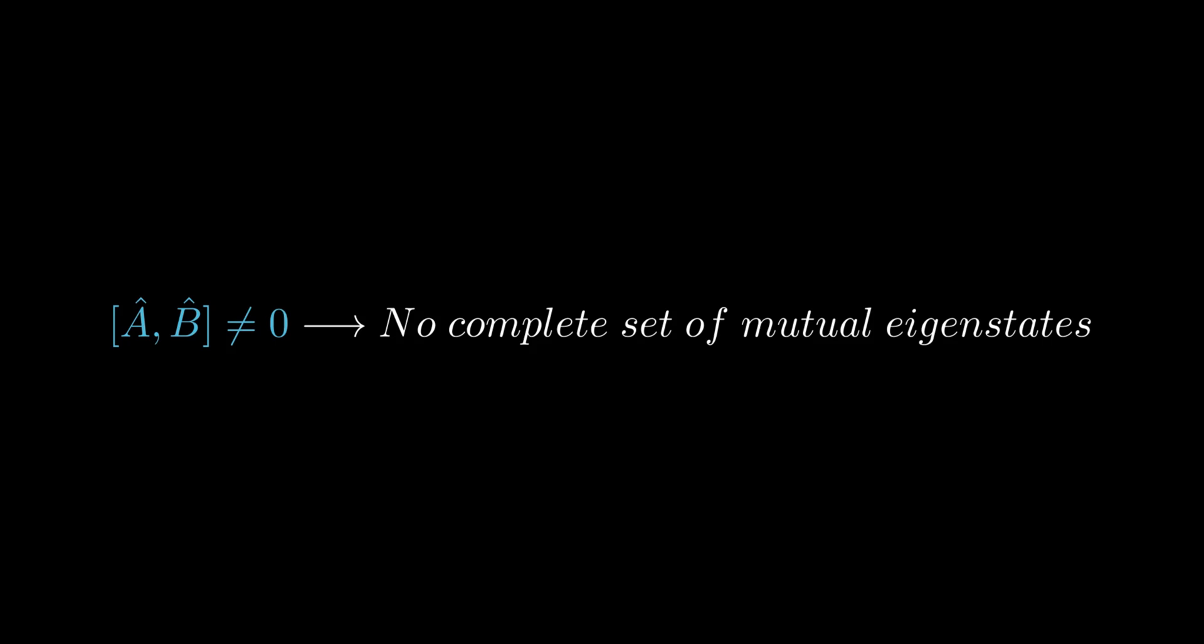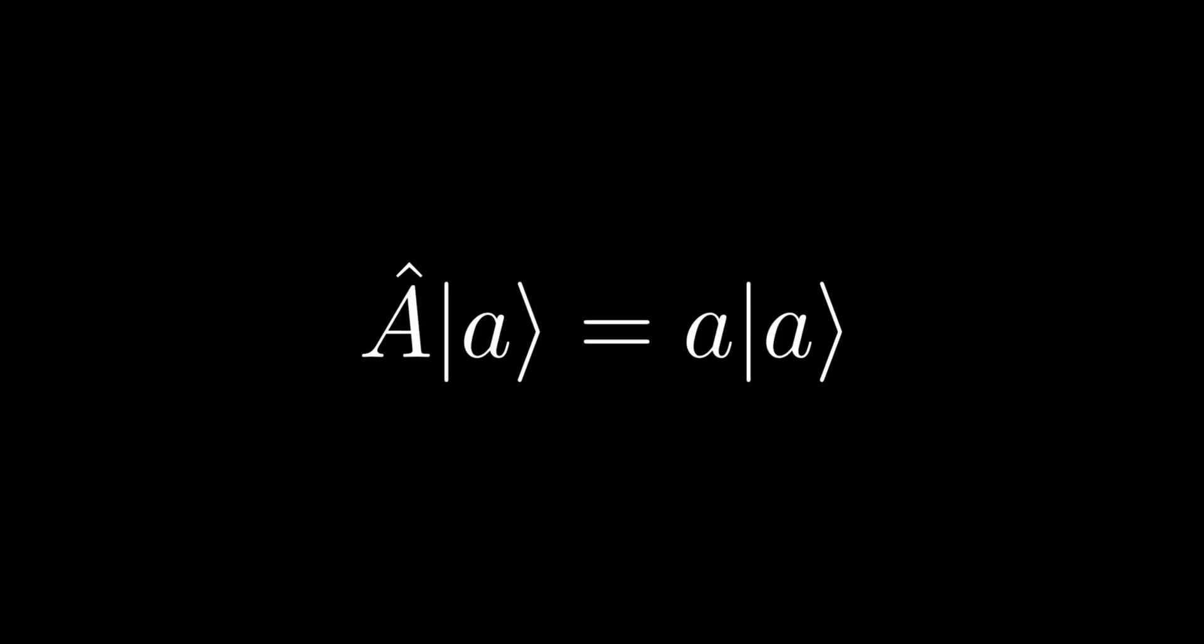Suppose we have a complete set of eigenstates of A such that it satisfies the following eigenvalue equation. We're now left to multiply both sides of the equation by B, which commutes with A. Therefore B on ket A is also an eigenket of A with eigenvalue a. If the eigenstates are non-degenerate for the same eigenvalue, then we conclude B on ket A equals to b ket A, where little b is a proportionality constant, also the eigenvalue.